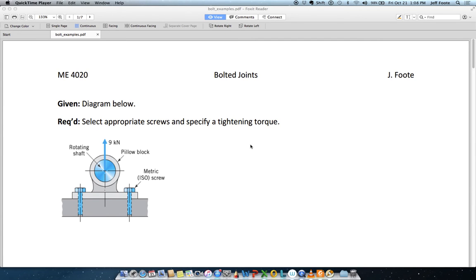The first bolt problem here is a very common typical kind of thing. There's a pillow block bearing housing which is bolted to some structure with two bolts. There's nine kilonewtons load, that load is parallel to the axis of both bolts, so it's a pure tension case.